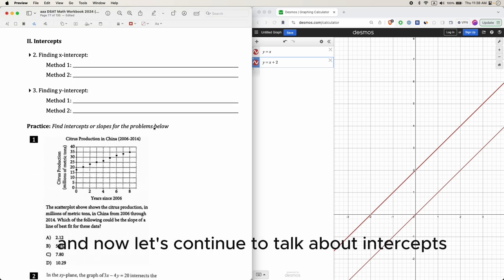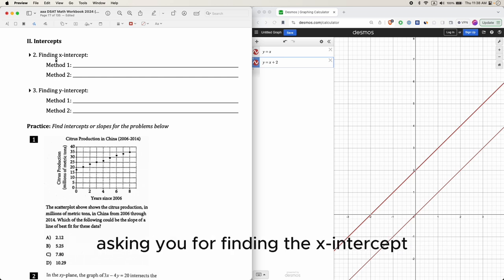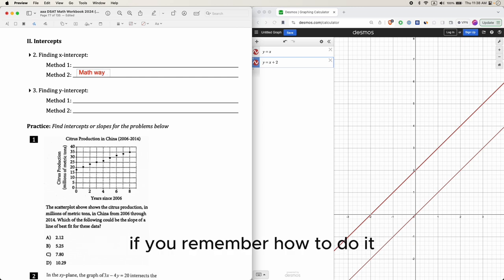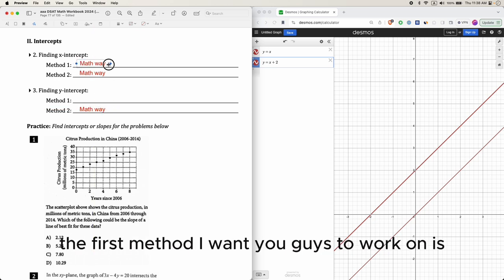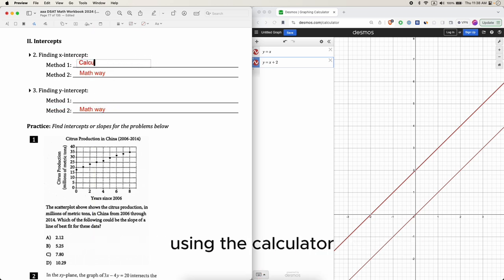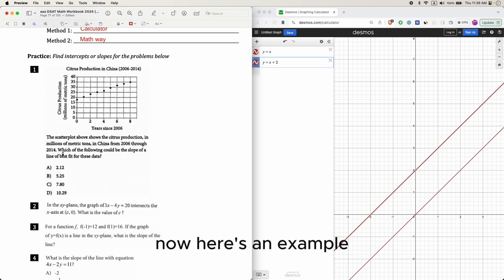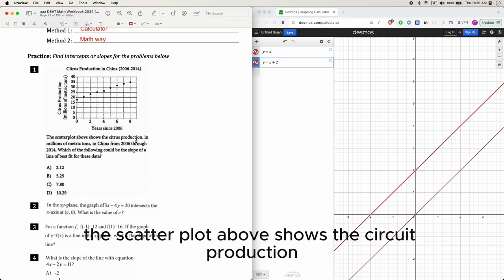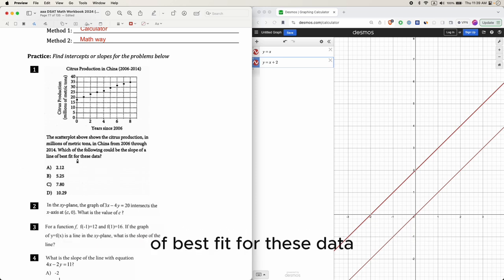And now let's continue to talk about intercepts. In the digital SAT, you can see the question asking you for finding the x-intercept or the y-intercept. And there is that math way that you remember from your math class if you remember how to do it. But if you don't, then take a guess what the first method I want you guys to work on is using the calculator.